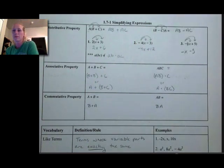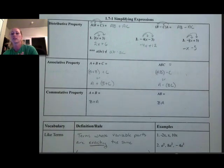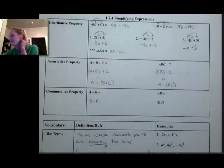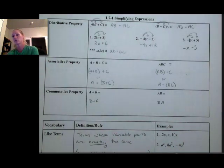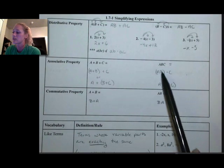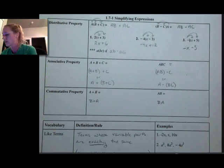Some other properties that are useful are the associative property, which is just a grouping property, and it works with addition and multiplication. So we can group a and b and add those first, or we could group b and c and add those first and then add a. It doesn't matter the order in which we do it. The same is true for multiplication — if I'm multiplying three values together, it doesn't matter if I do the first two together first or the last two together first, as long as I end up multiplying all three.